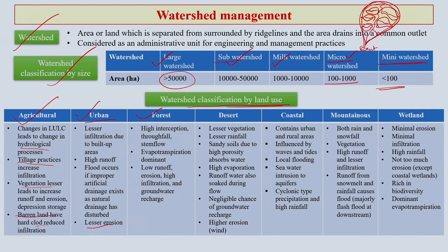Forest land use can also have watersheds. Those watersheds are largely regulated by high precipitation, high evapotranspiration, low runoff, low erosion, and high infiltration — and of course high groundwater recharge because forests have a lot of plant cover.